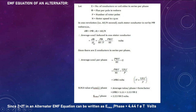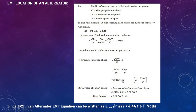By Faraday's law of electromagnetic induction, average EMF = dφ/dt = Pφ divided by (60/N) = PφN/60 volts. This is the average EMF induced in one stator conductor. If there are Z conductors in series per phase, multiply by Z. Using N = 120f/P, this simplifies to 2fφZ volts, which is the average EMF per phase.